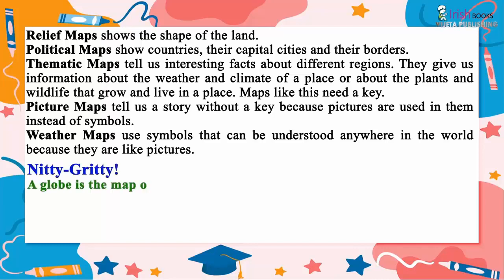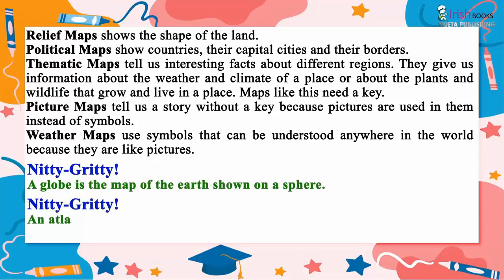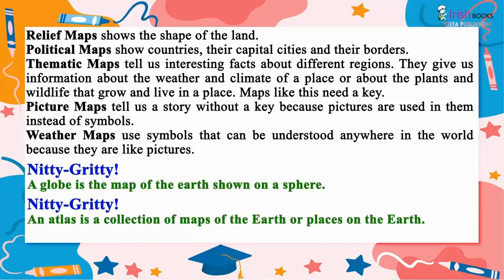A globe is the map of the earth shown on a sphere. An atlas is a collection of maps of the earth or places on the earth.